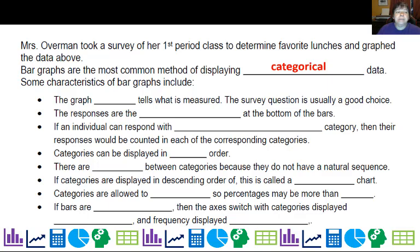Some characteristics include the graph title - you can use the survey question, that makes a great graph title. The responses are the categories at the bottom of the bar. If an individual can respond with more than one category, so if I allowed my students to say pizza and burgers, then their responses would be counted in the corresponding categories. Categories can be displayed in any order, you can do it alphabetically.